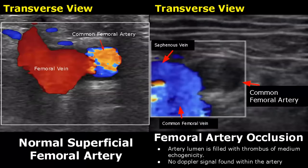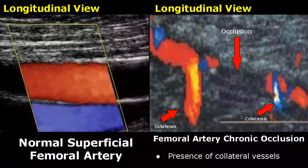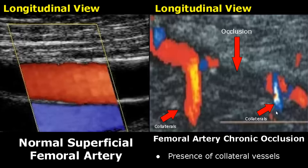In femoral artery occlusion, the lumen is completely obstructed with a thrombus of medium echogenicity. Blood flow is obstructed, so we do not see any flow within the artery and no Doppler signal is found. In chronic cases of occlusion, we will see collateral vessels around the occluded area. You can see these collaterals have formed, and this is the occluded area — indicative of chronic occlusion.